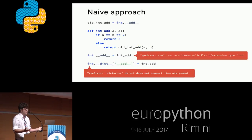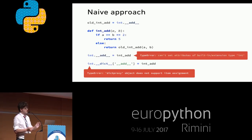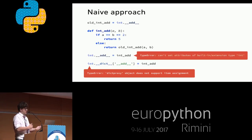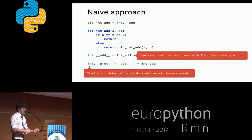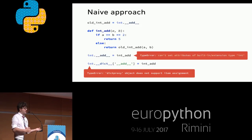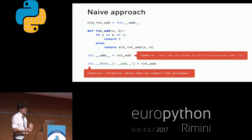A naive approach — and it's only naive because it doesn't work — is to take a reference to the old `__add__` method, define a new method that if A and B are both 2 returns 5, otherwise calls the old add. Then you try to set `int.__add__` to your new add and get a TypeError: can't set attributes of built-in extension type int. You try to set it on the dict and get: dict proxy object does not support item assignment.